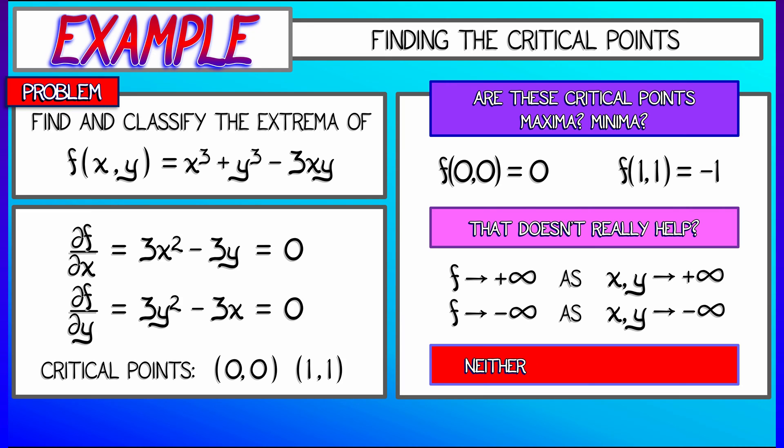So what that means is that we don't have global maxes or mins. These are local at best, and just by knowing the function values, it's not clear what they are or how to figure it out.